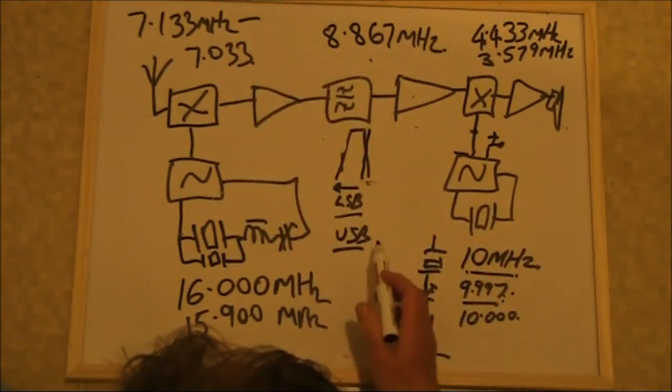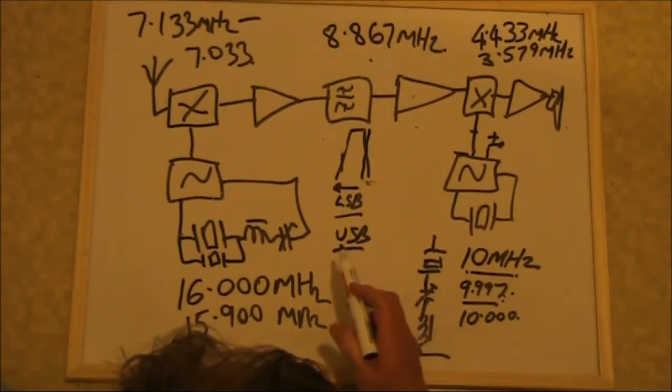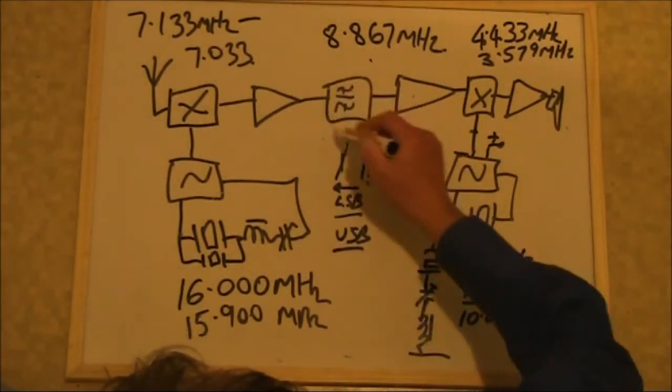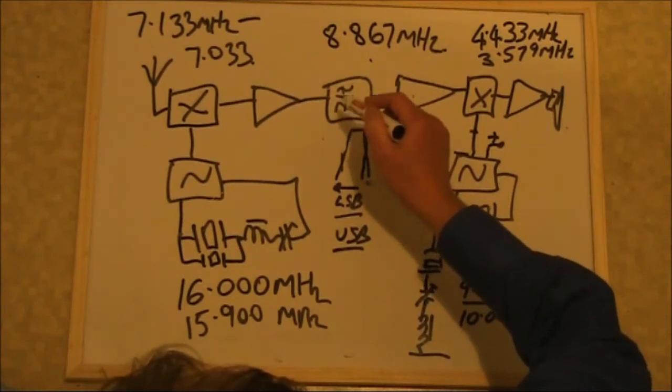And although I've only covered receivers just here, it also applies equally to SSB transmitters and also CW rigs. In fact, CW is a little bit easier because you don't need to worry about considerations with the crystal filter here on transmit.